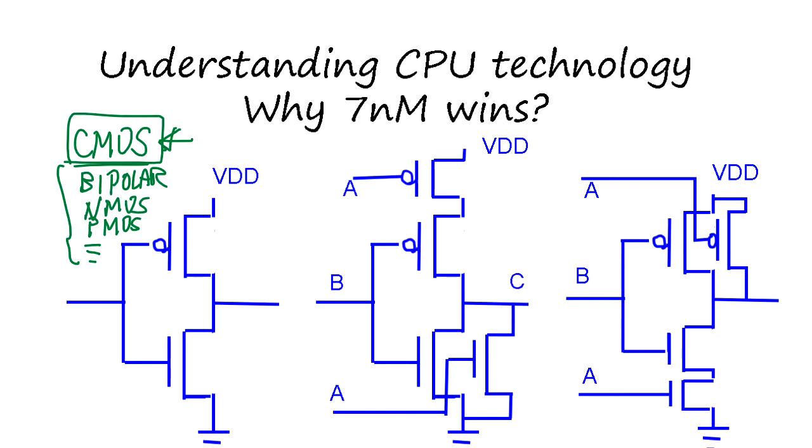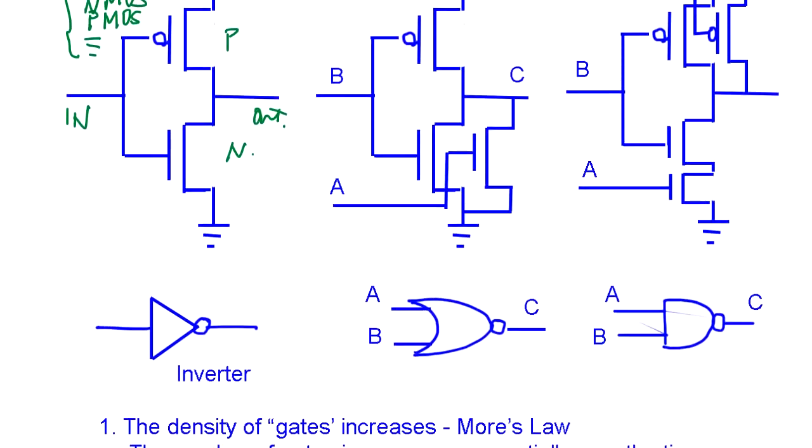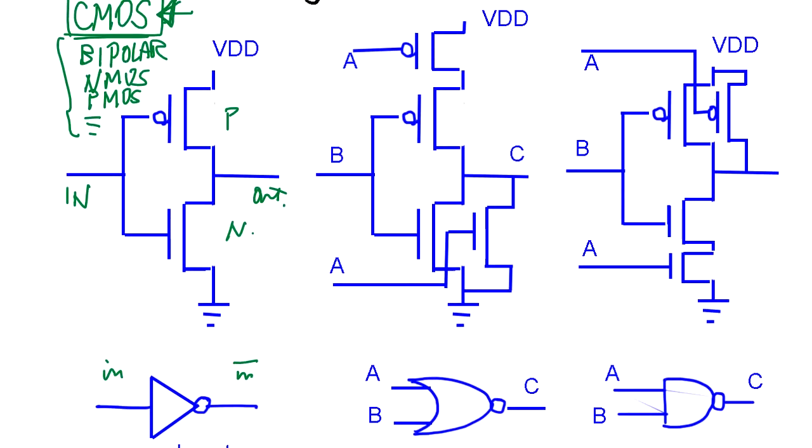When you switch the transistor on and off, the least energy is required for the CMOS gate. The CMOS gate has two types of transistors: P-type and N-type, and they are cascaded like that. This is the input and output, and these two transistors create an inverter, meaning the output will be the negation of the input. If you combine some transistors together in this configuration, it's going to be a NOR gate, and this is going to be a NAND gate. So the CPU is made of a bunch of those gates.